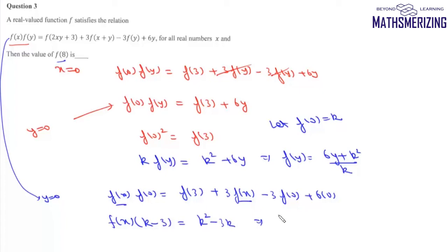If f(x) = k, the function would be constant. A constant function doesn't satisfy the given condition, so we eliminate this case. Therefore, k must equal 3.